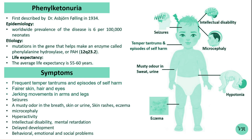A blood test is done to measure the concentration of Phenylalanine in blood. The normal level of Phenylalanine is generally less than 2 mg per deciliter, and levels greater than 6 mg per deciliter can suggest PKU.